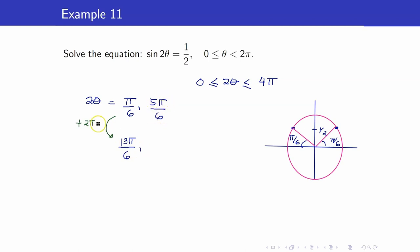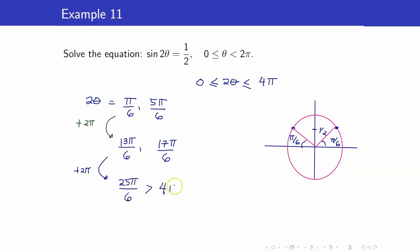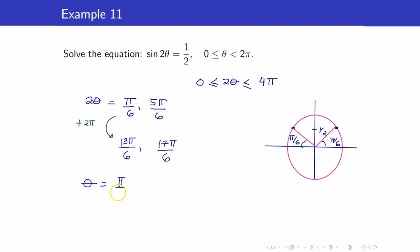5 pi over 6 plus 2 pi is 17 pi over 6. If we add 2 pi again, we get 25 pi over 6, which is already greater than 4 pi, so we stop at 17 pi over 6. However, these are the values for 2 theta. To get the values of theta, we divide everything by 2. Therefore, the solutions are pi over 12, 5 pi over 12, 13 pi over 12, and 17 pi over 12.